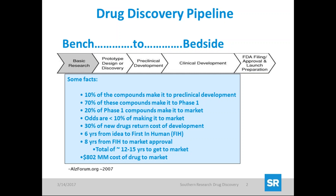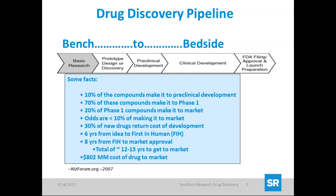Discovering a drug doesn't happen overnight. It takes years and a lot of money. The percentage of success is usually low — not due to poor work or science, but because it's really a difficult process to optimize all the properties of a molecule in conjunction with biological activity, selectivity, and off-target effects, to make the compound go into a human body, reach the target, and see efficacy.